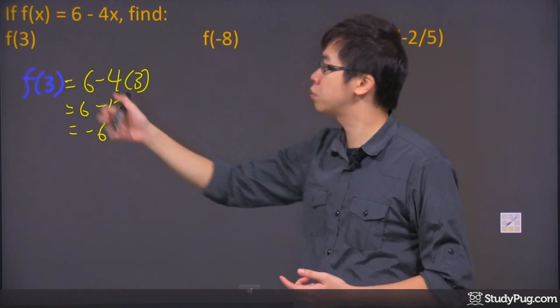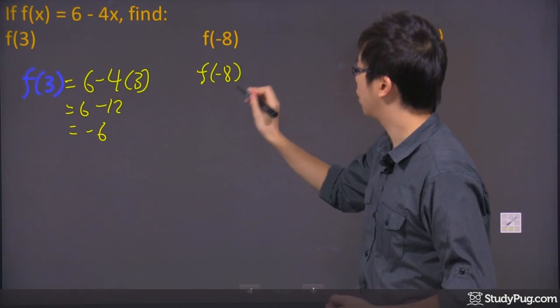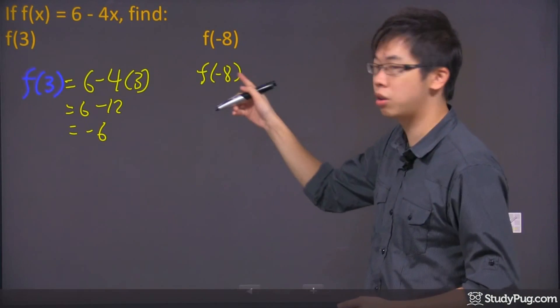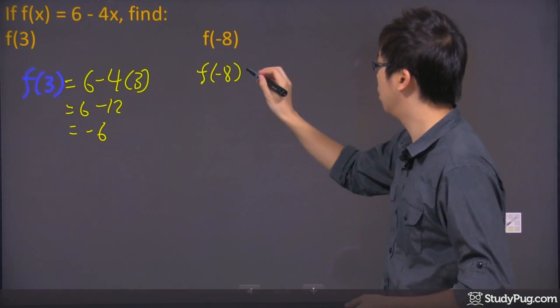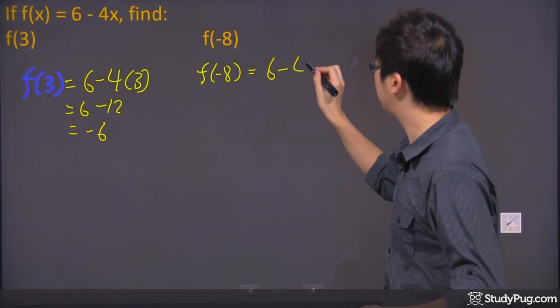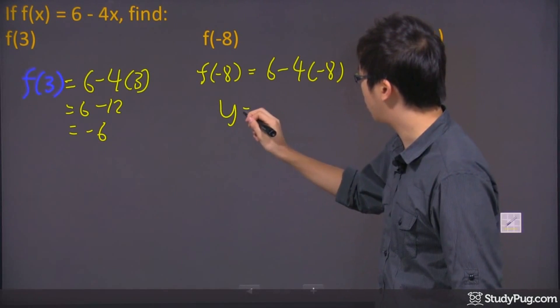So we're using the same expression right here. So let's just rewrite it as f of negative 8. It actually means y. This whole thing here, the function of negative 8, it actually means y equals to. So we got 6 minus 4, and we put a negative 8 right in there. So you can actually change it into y.